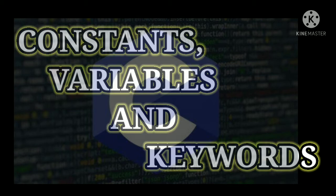A constant is an entity that doesn't change, whereas a variable is an entity that may change.